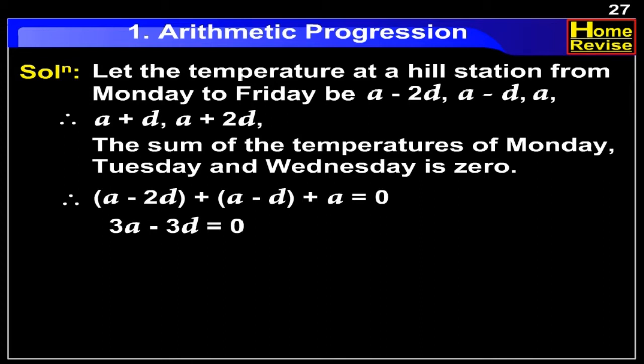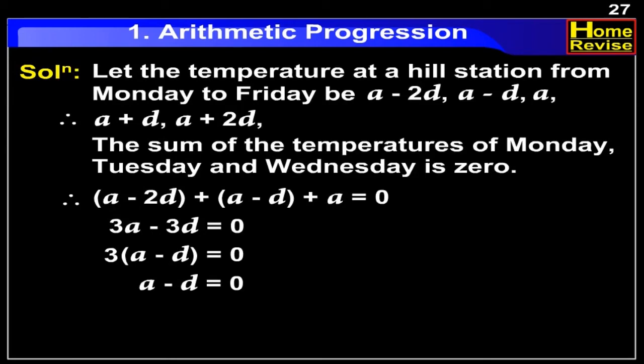Taking out 3 common, we get 3(A minus D) is equal to 0. Therefore, A minus D is equal to 0. Therefore, we have A is equal to D.